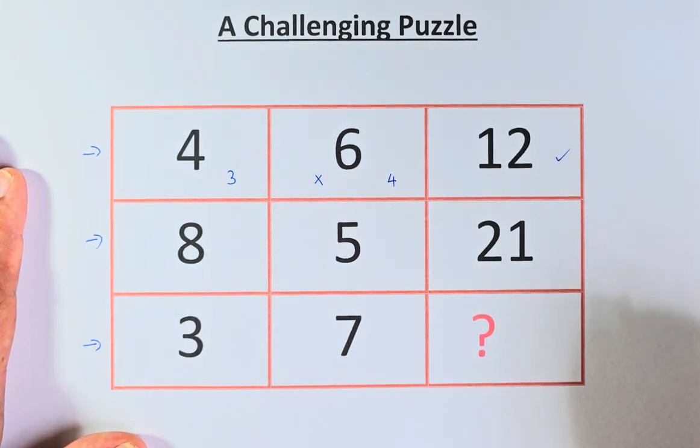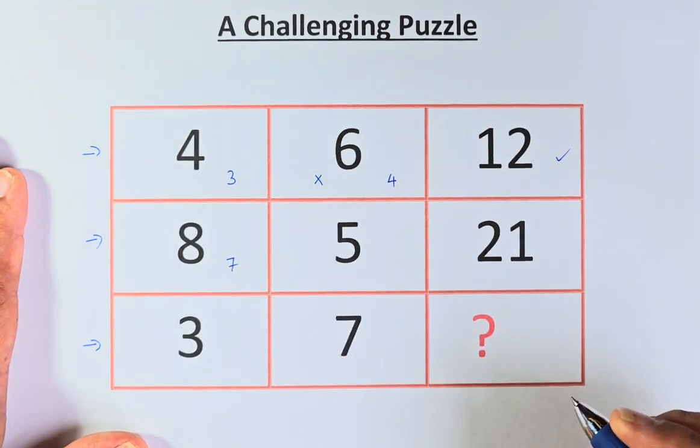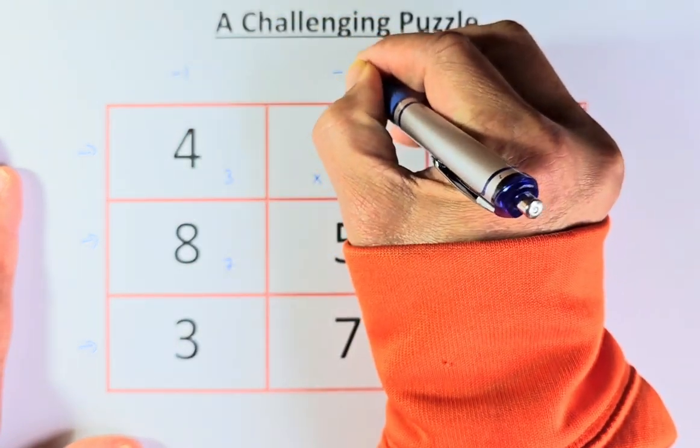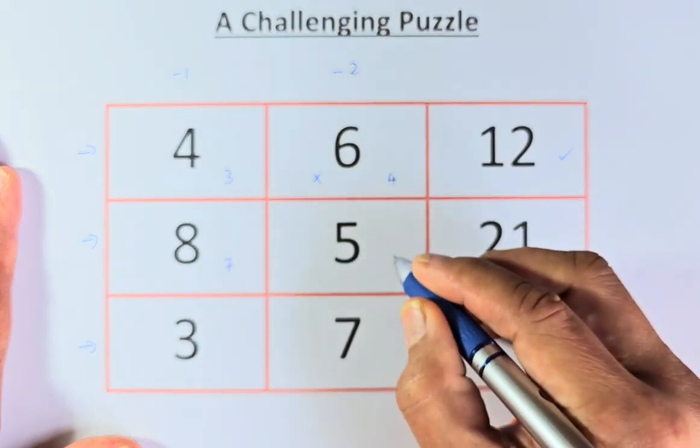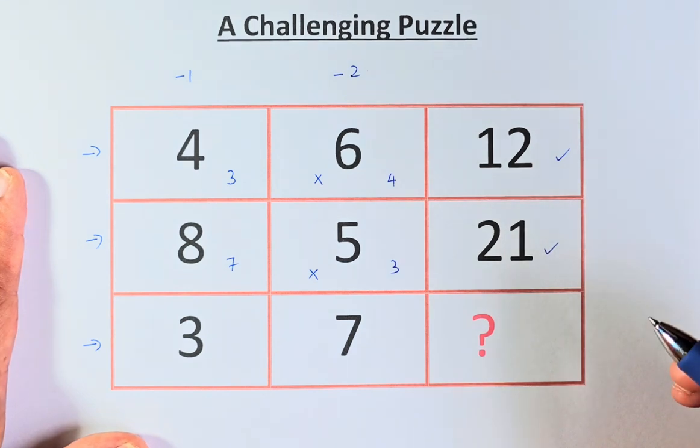Similarly, for the second row, 8 becomes 7 because you minus 1. So the first column, you minus 1. Second column, you minus 2. So 5 minus 2 will give us 3 and then you multiply 7 times 3, that is 21.